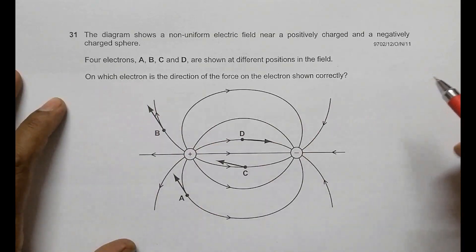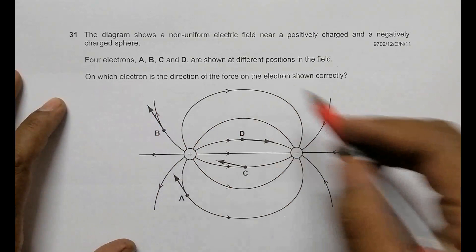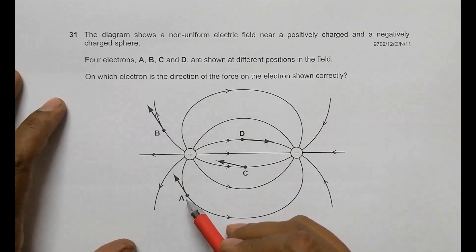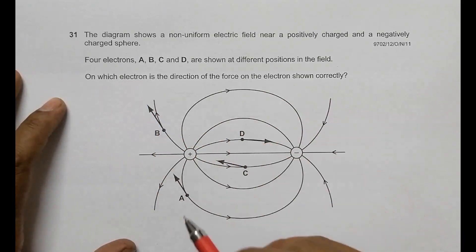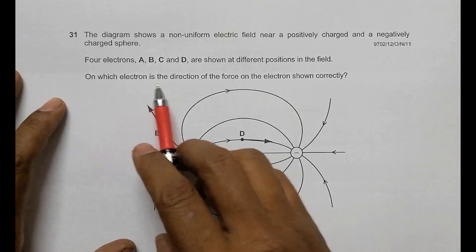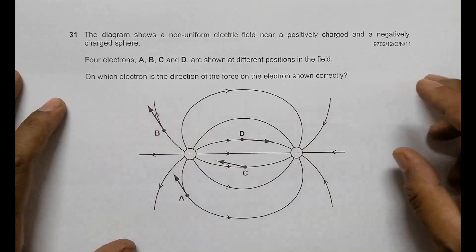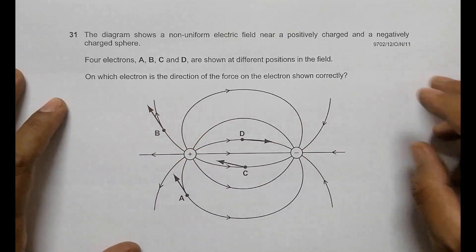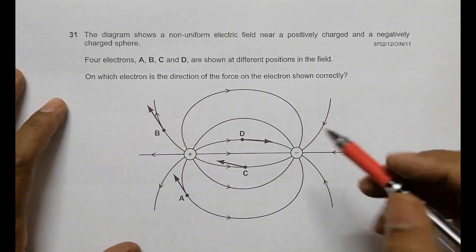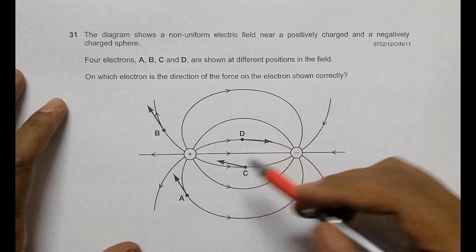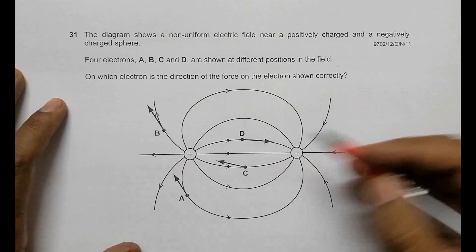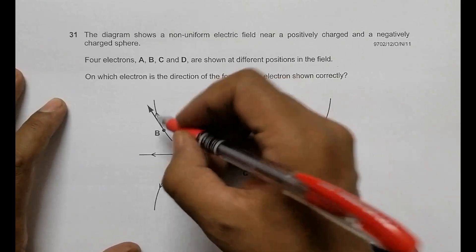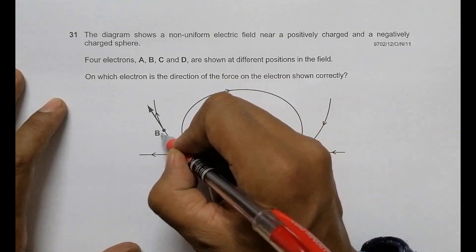Electrons at positions A, B, C, and D are shown at different positions in the field. We have to identify which position shows the correct direction of the force on the electron. Let us start with position B.